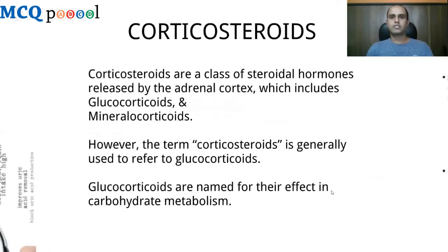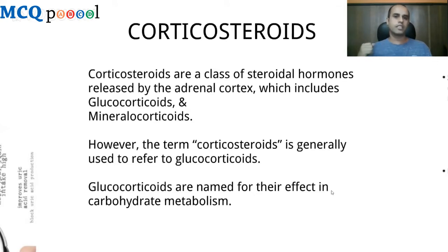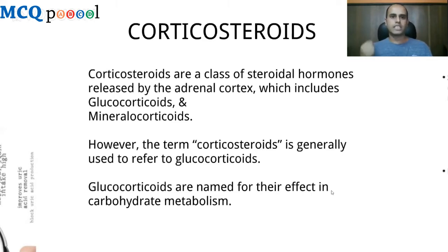Corticosteroids are a class of steroid hormones released from the adrenal cortex and they include both glucocorticoids and mineralocorticoids. However, the term corticosteroids is generally used to refer to glucocorticoids. The name glucocorticoids comes from their effect on carbohydrate metabolism; they have roles in metabolism of carbohydrates, fat, and protein, but the effect on carbohydrate metabolism was identified first, hence the name glucocorticoids.